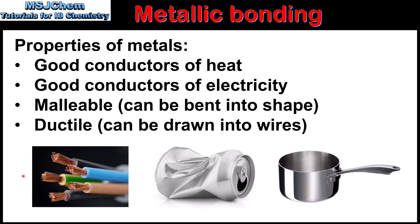Here we have some examples of the uses of metals. Metals are used as wires because they are ductile and good conductors of electricity. The crushed can shows that metals are malleable, which means they can be bent into shape. And metals are used to make saucepans because they are good conductors of heat.